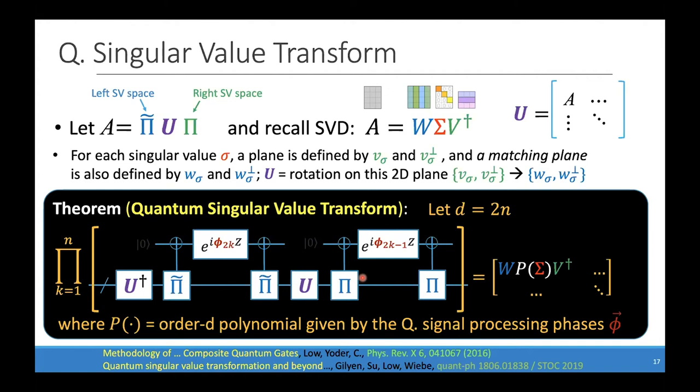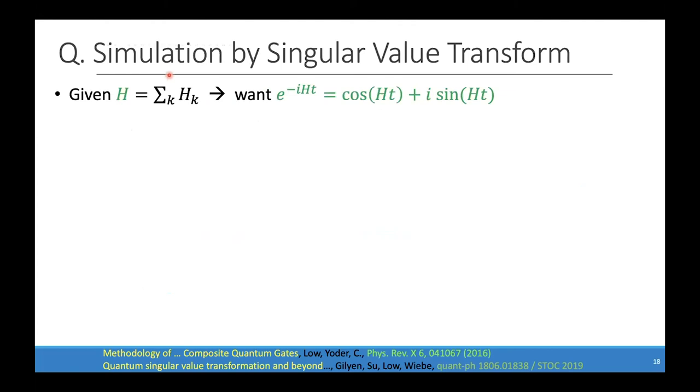The theorem shows that if you insert a Z rotation between U† and U, and another Z rotation, it will transform the singular values of matrix A by a polynomial — an order-d polynomial given by the quantum signal processing phases φ. This is just Grover's algorithm, but with the recognition that there are two vector spaces, two Bloch spheres involved: one for the left singular vectors and one for the right. This is the most remarkable thing of their whole paper, arising from András Gilyén's deep understanding of singular value decomposition combined with the signal processing theorem.